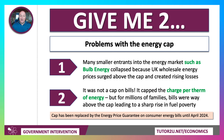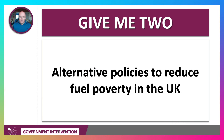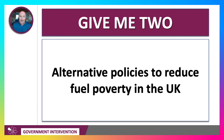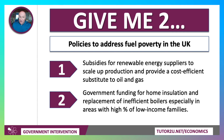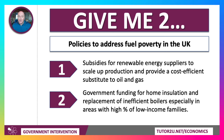Up to April 2024, the cap has been suspended and replaced by the energy price guarantee on consumer energy bills. Fuel poverty is where you spend at least 10% of your income on fuel, and it's a major issue in the UK. Two alternative policies to reduce fuel poverty: one would be to give subsidies to renewable energy suppliers to scale up production and provide a more cost-efficient substitute to traditional oil and gas. Another focus could be government spending on home insulation and boiler replacement schemes, especially in areas with a high percentage of relatively poorer families.